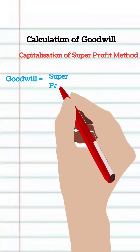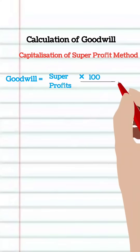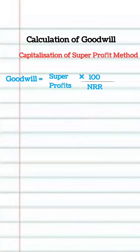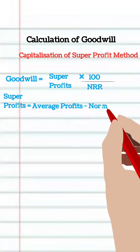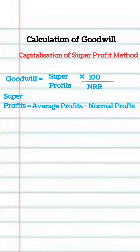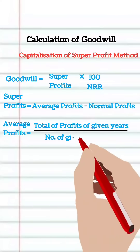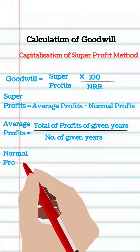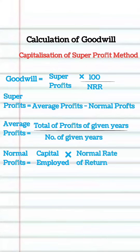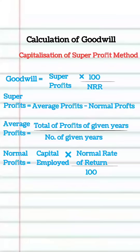Goodwill as per the capitalization of super profit method is equal to super profit multiplied by 100 divided by normal rate of return. Super profit is equal to average profit minus normal profit. Average profit is equal to sum total of profits divided by number of years. Normal profit is equal to capital employed multiplied by normal rate of return divided by 100.